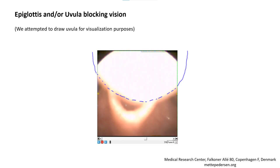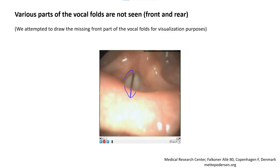The next issue is the epiglottis or the uvula blocking vision. We have outlined the uvula on the image, which is causing more obstruction of the vision than individual parts. In some cases, parts of the vocal folds were not visible due to more than one factor.